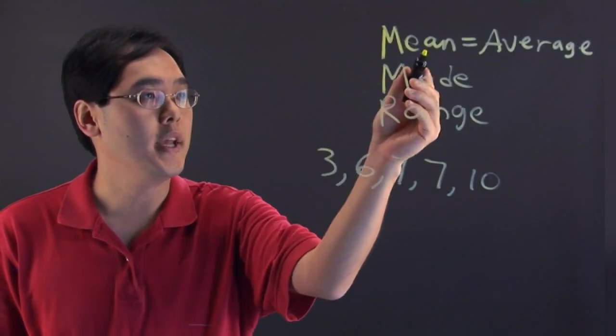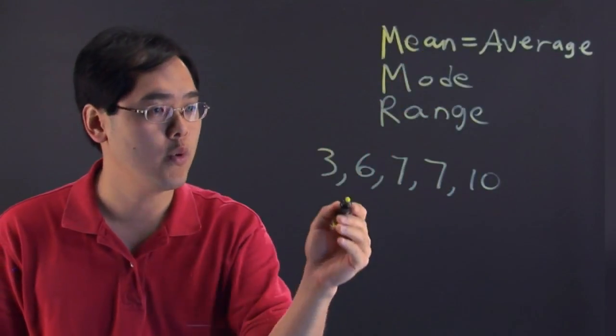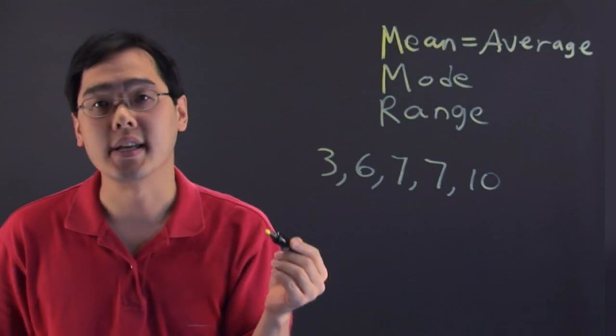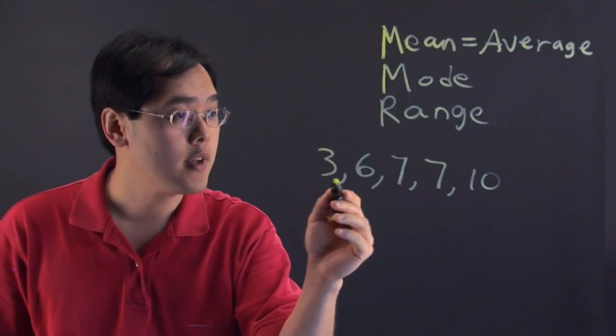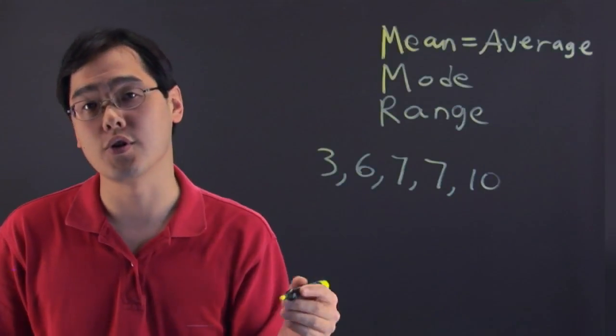To find the mean or average, you want to add all these numbers together and divide by how many numbers you see. You have five total numbers, so you divide by five.